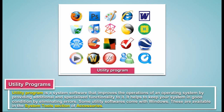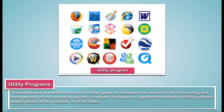Utility Programs: A utility program is a system software that improves the operations of an operating system by providing additional and specialized functionality to it. It helps to keep your system in good condition by eliminating errors. Some utility softwares come with Windows and are available in the System Tools section of Accessories. Utility software is related to the fine tuning and management of the operating system, computer hardware, or application software, and usually deals with a number of small tasks.